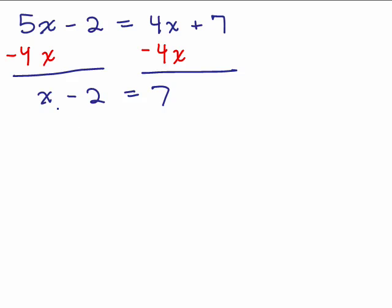So what does that give me now if I just subtract 4x from both sides? That gives me x minus 2 equals 7. Now this looks like something else we've already done. So now I want to have just, to find out what x equals, I'm going to have to add 2 to both sides. And then we have x plus 0, or x equals 9.